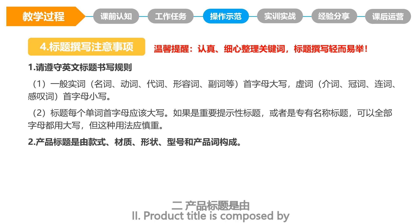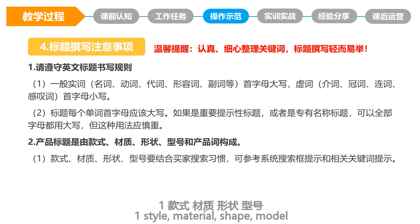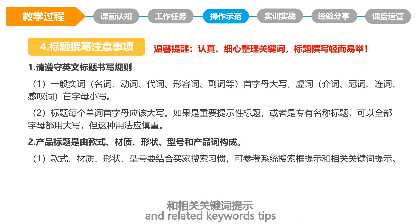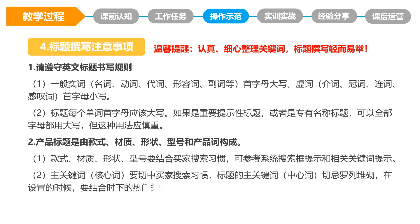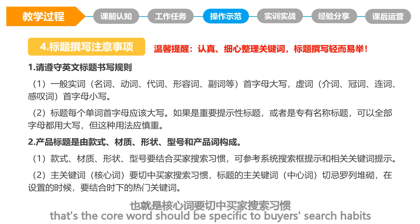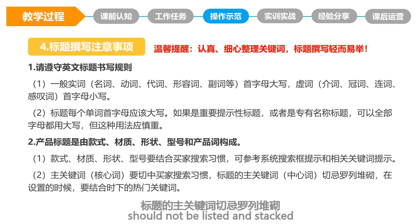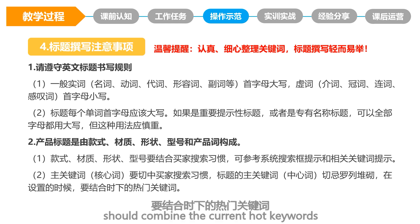Second, product title is composed of style, material, shape, model, and product word. Style, material, shape, and model should combine the buyer's search habits and refer to the system search box suggestions and related keyword tips. The main keywords of the title should not be listed and stacked when setting; instead, combine the current hot keywords.